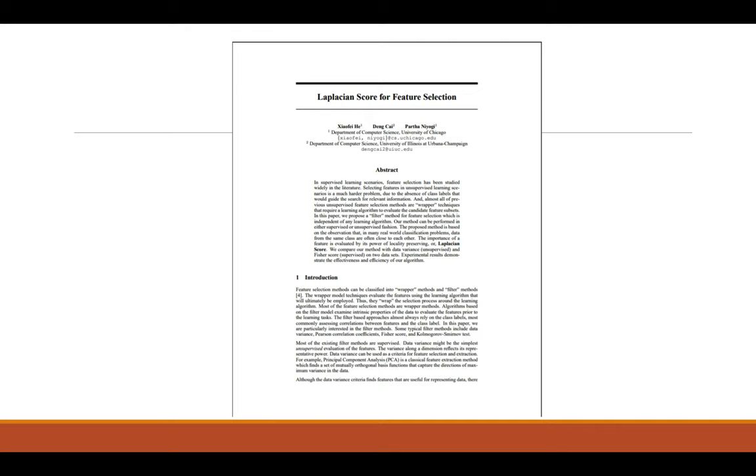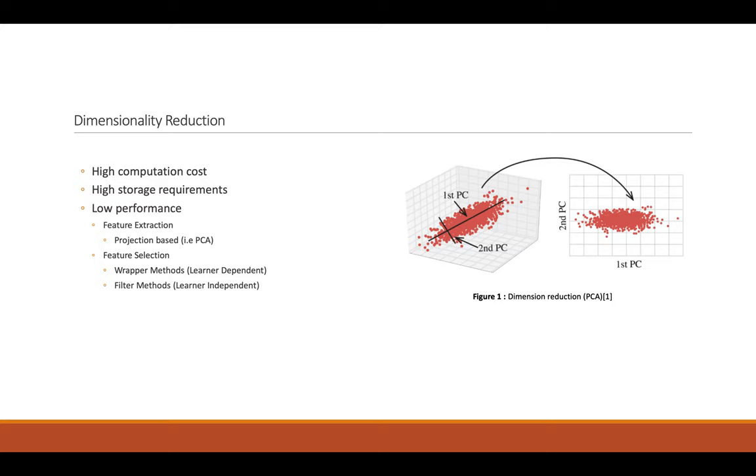Before a deep dive to the paper, let's enlighten a few basic concepts. The first one is Dimensionality Reduction. Working with too many features requires high storage and has high computational cost and mostly gives us low performance. Feature selection is used for selecting most contributing features and eliminating the irrelevant features. Dimensionality reduction is also good for visualization of the data.